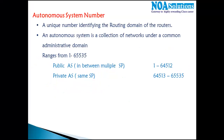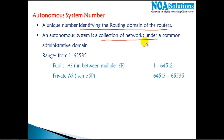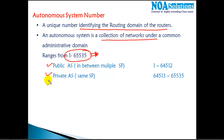The autonomous system number identifies one routing domain, or in other words, the collection of networks under a common administration. The default range of AS numbers that can be assigned to a specific autonomous system is from 1 to 65535, and within that range it is further classified into two categories: private AS numbers and public AS numbers.